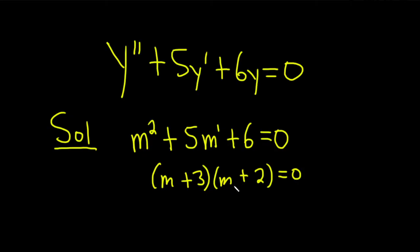We should always check our work here. m times m is m squared. And then 3 times 2 is 6. And the inner piece is 3m. The outer piece is 2m. And when you add them, you should get the middle term, which is 5m. So all is good.